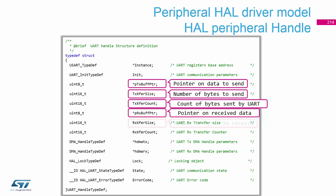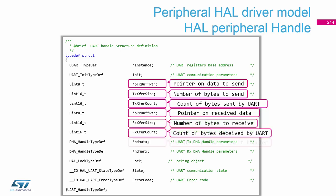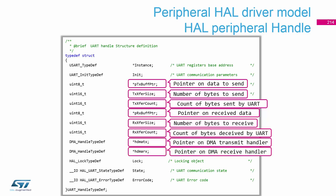The same structure applies for reception. And also, when we start cooperating with the DMA, we have a pointer to the DMA for transmit and also for receive.